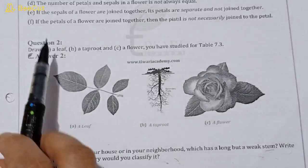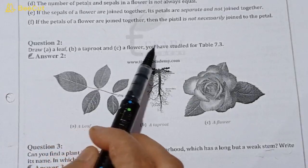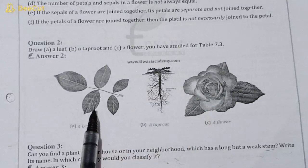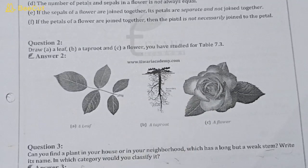Question number two: draw a leaf, a taproot, a flower you have studied for table 7.3. The answer is you have to draw a leaf like this, roots and flower from the book.